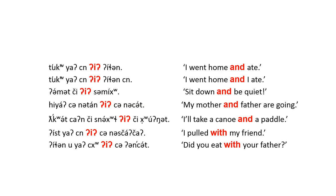English uses with in a number of ways. I fought with him could mean I fought against him or I fought using him, maybe like an attack dog, or I fought alongside him, so he would be accompanying me. Only the alongside meaning is translated with e in Klallam.